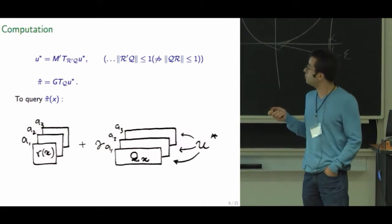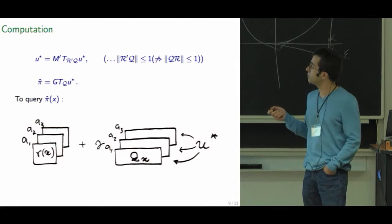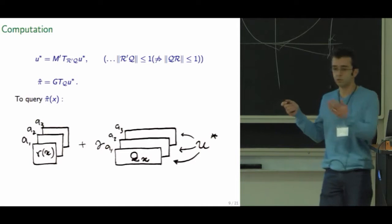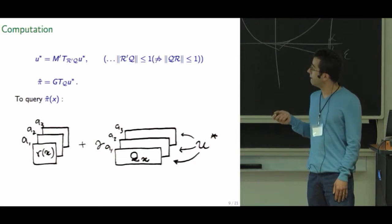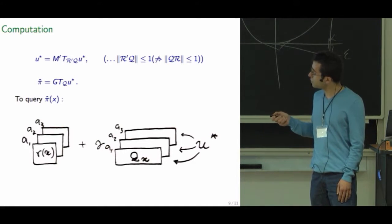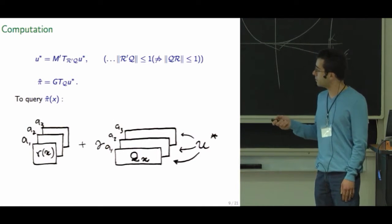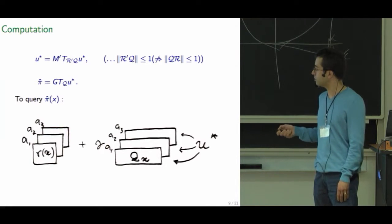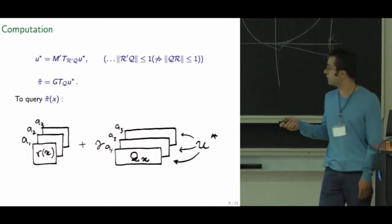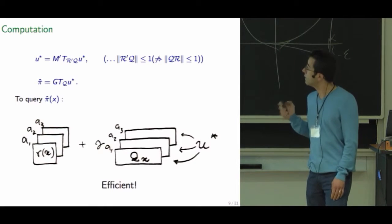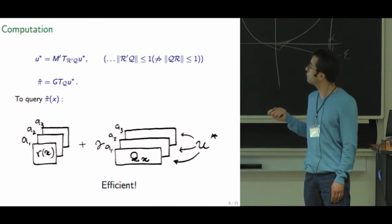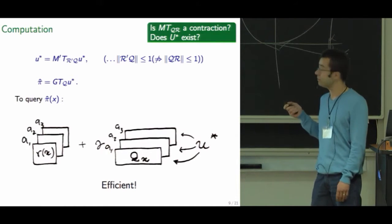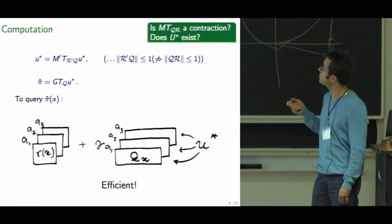And for you to be able to do this, we're going to impose this non-expansion constraint on R' Q, which doesn't necessarily imply that QR is also a non-expansion. To compute this policy, all we need to do is some small amount of computation every time we want to query it, just a product between two low dimensional vectors, add a scalar and take the max over actions. And so this is efficient. Two questions that remain are whether MT_QR is a contraction - not really in general. And does u star exist? Yes.